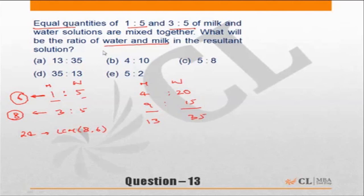What will be the resultant ratio of water to milk? The question is about water to milk. Water to milk is 35:13, choice D. And if you notice, there is a choice A also, which is nothing but milk to water.